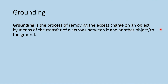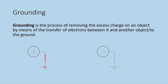For a positively charged object to become neutral, we have to add more electrons. When connected to the ground — which acts as a huge reservoir of charges — the positive object receives electrons from the ground until the number of electrons and protons are equal. For a negatively charged object, it releases excess electrons to the ground until the number of electrons and protons are equal and it becomes neutral. This is grounding.